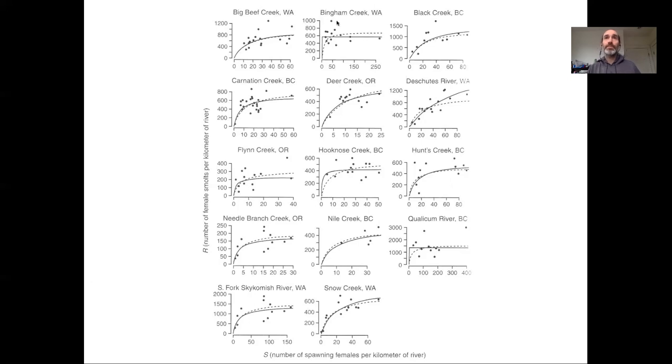But this next example right next to it, Bingham Creek, is an example where when we fit this stream by itself, we get parameters that don't really make sense biologically. There's a kind of fixed output of recruits almost independent of the amount of spawning, just a constant mean. By contrast, when we have a hierarchical effect, we're able to borrow strength similar to the allometry model and produce estimates of the curvature and asymptote that is sharing information from the other streams.